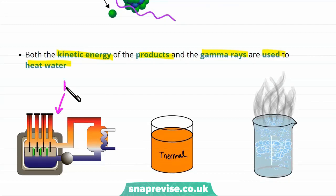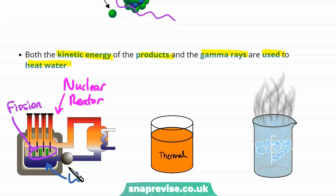So on the left here we have a picture of a nuclear reactor. In a nuclear reactor we have lots of fission going on and nearby there is a large amount of water. The energy from fission goes into the thermal energy store of the water.